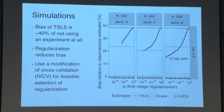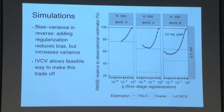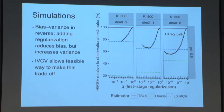We introduce a modification of cross-validation designed for this instrumental variable setting — IV cross-validation — to feasibly select the regularization parameter. For mean squared error, as expected with regularization there's a bias-variance trade-off, but here it's backwards: adding regularization reduces bias at the cost of variance. There's a point where the trade-off is favorable — not too much variance added but bias greatly reduced. The IV cross-validation in dotted blue selects a model with relatively low mean squared error.